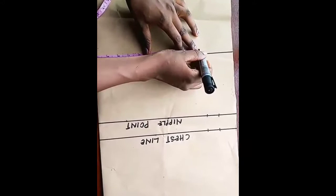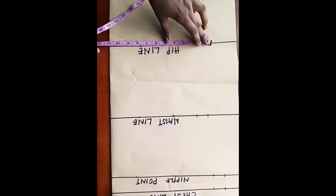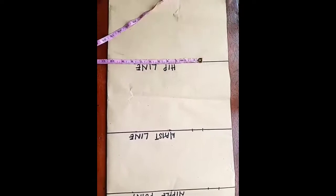So on my hip side, my hip is 38. 38 divided by 4 will be giving me like 9 and a half. So I'll be taking,